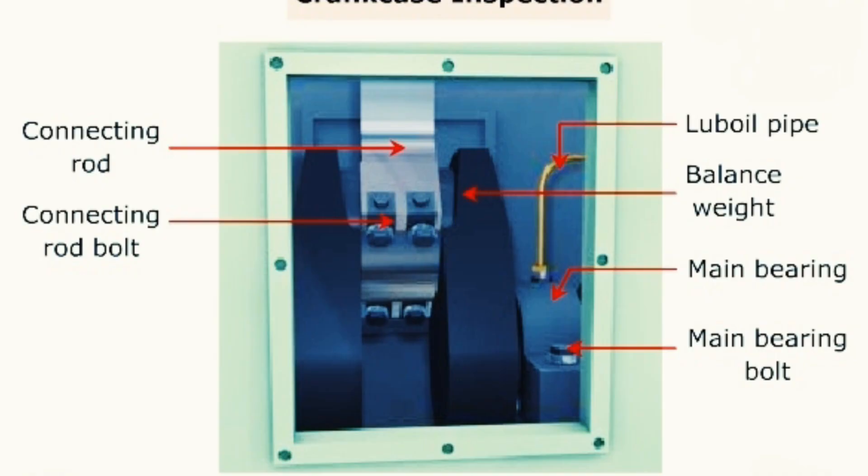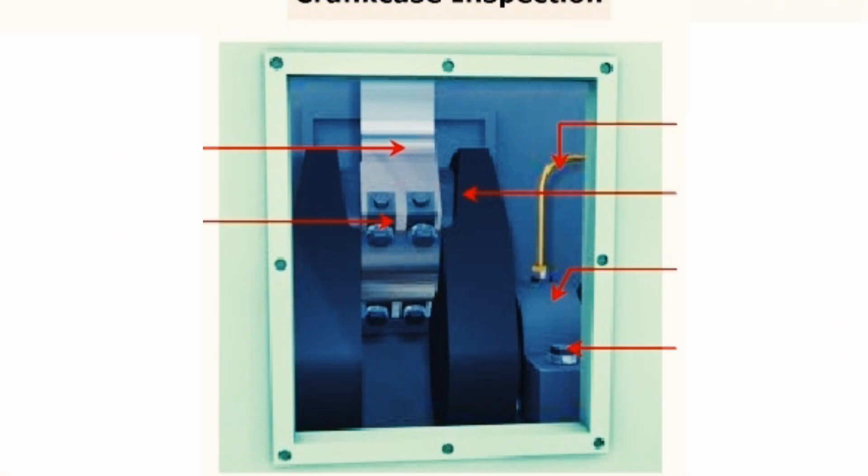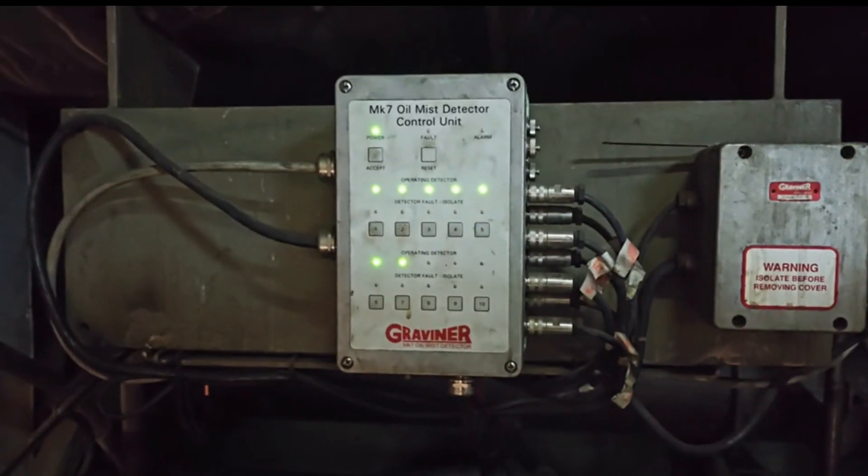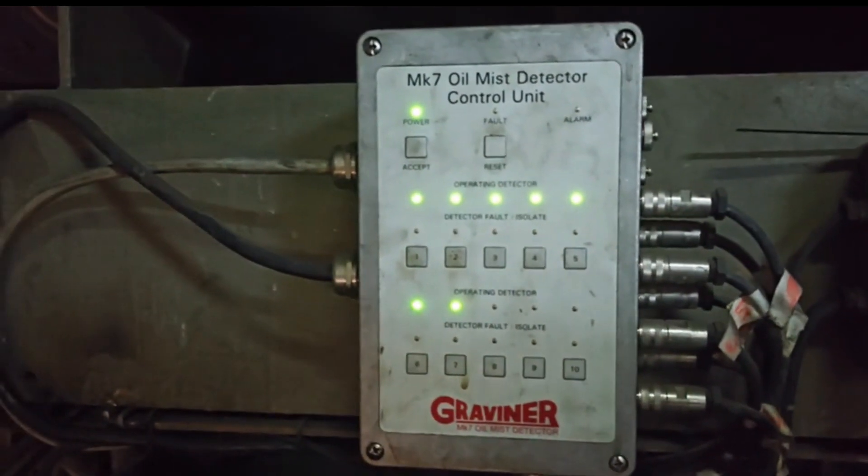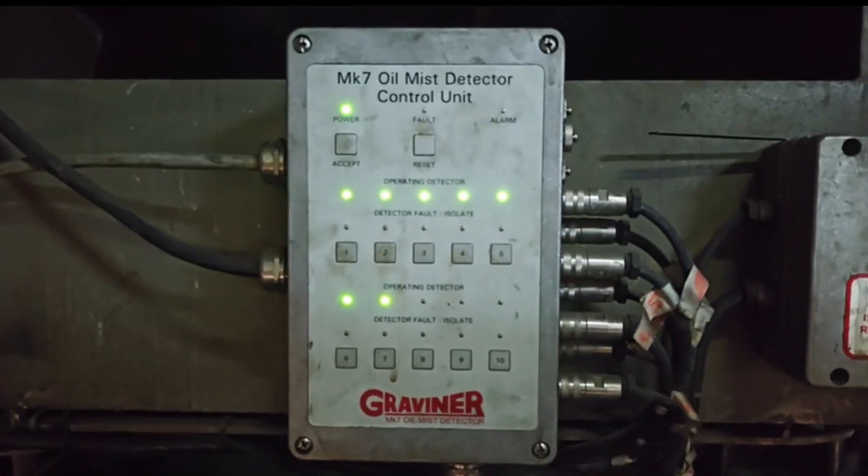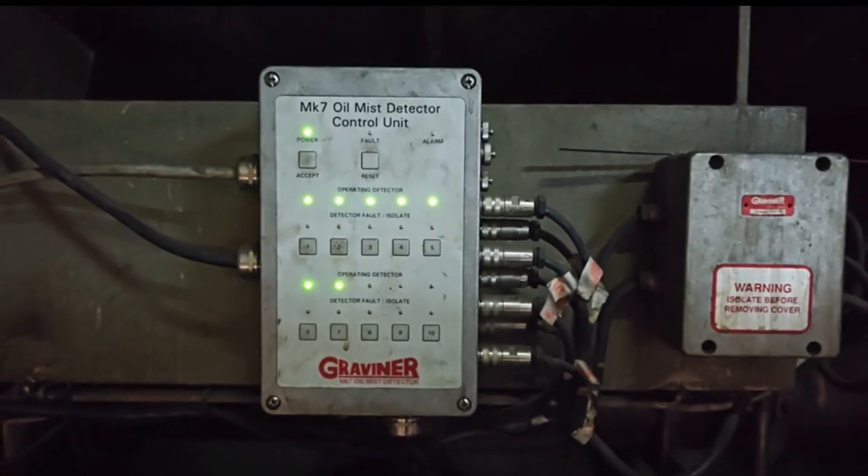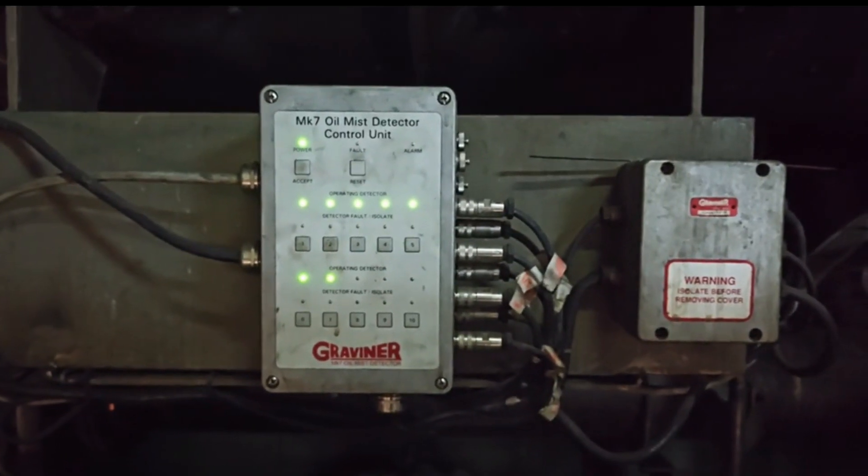Oil mist ignites at low temperatures and can cause severe damage such as crankcase explosion. The oil mist detector acts as a safety alarm, thus helping avoid crankcase explosion and thereby protecting main engine and engine room fire.